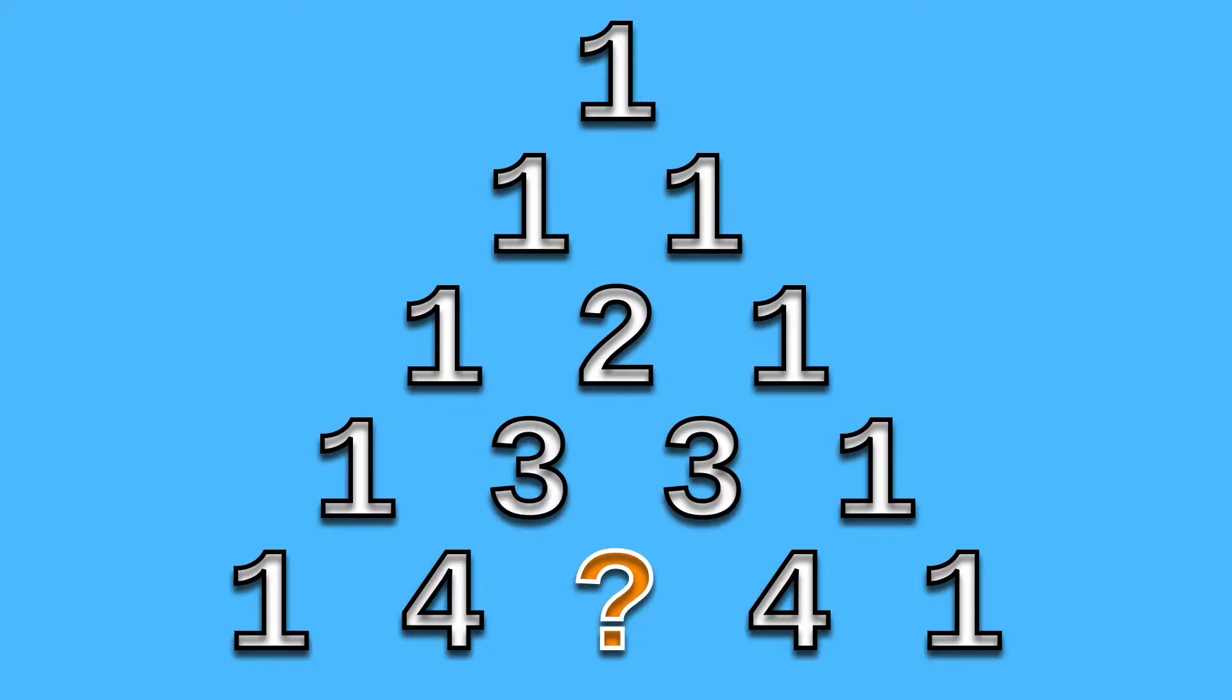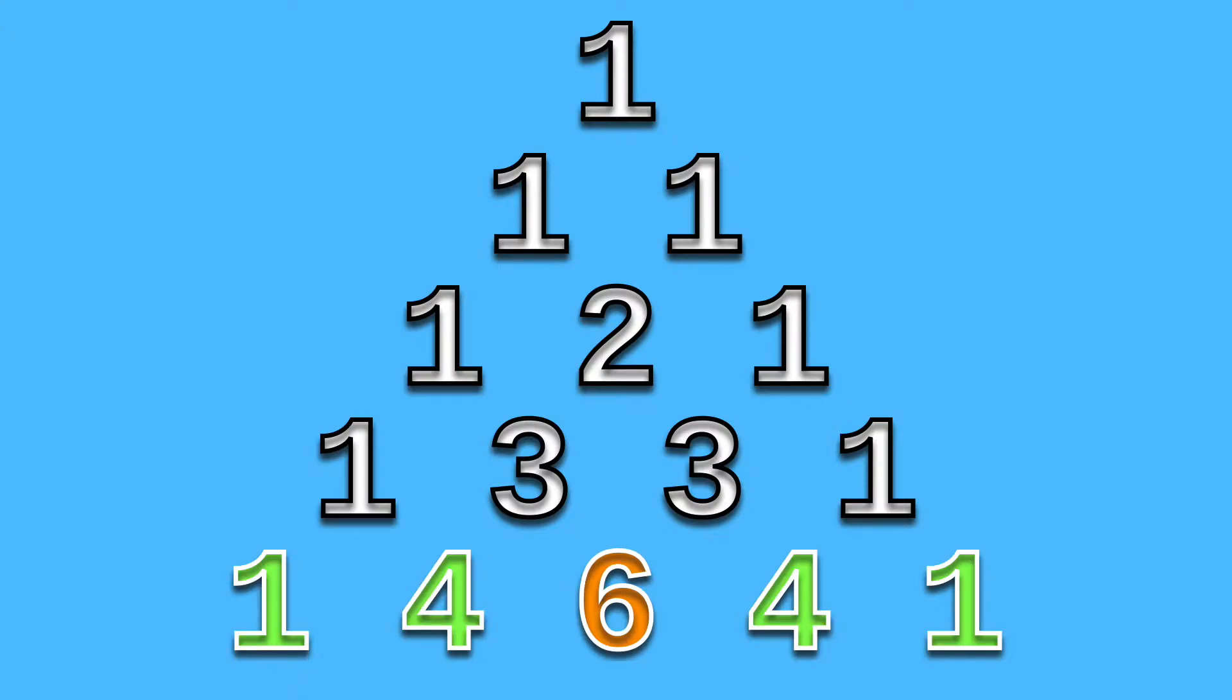Now, on to the fifth row. At this point, the pattern is pretty clear. Since the question mark is directly underneath both 3s, the missing number is 3 plus 3. The answer is therefore 6.